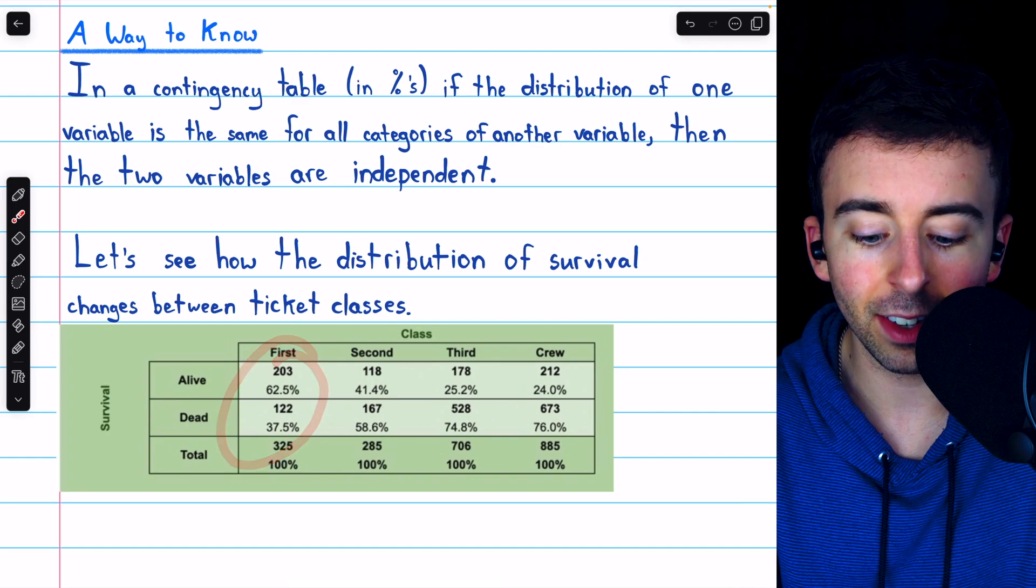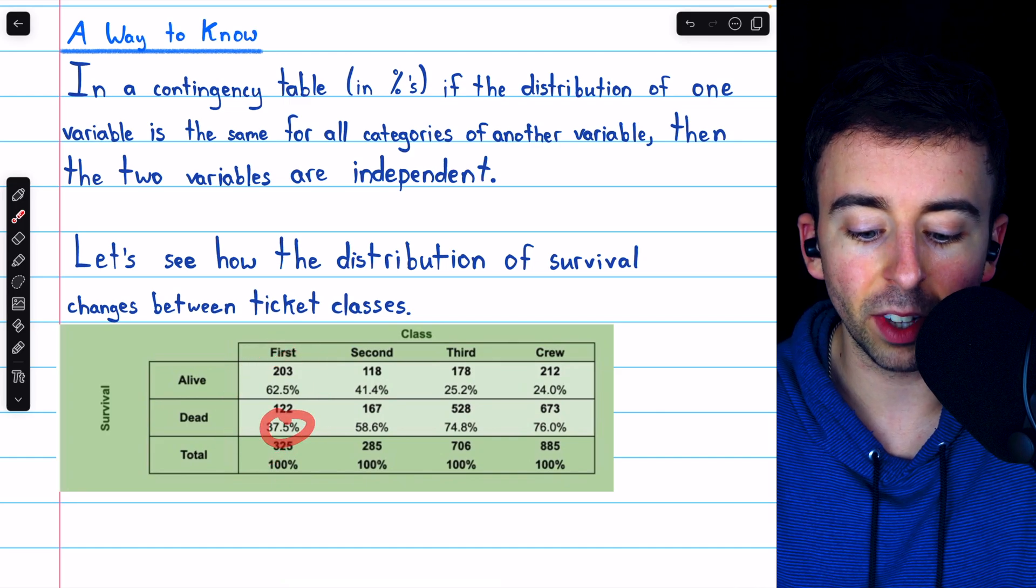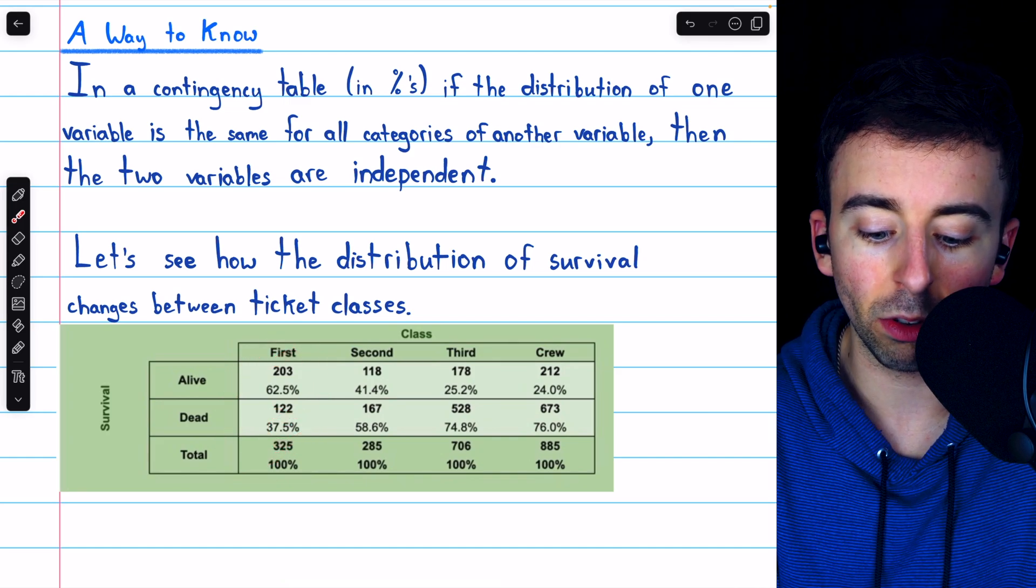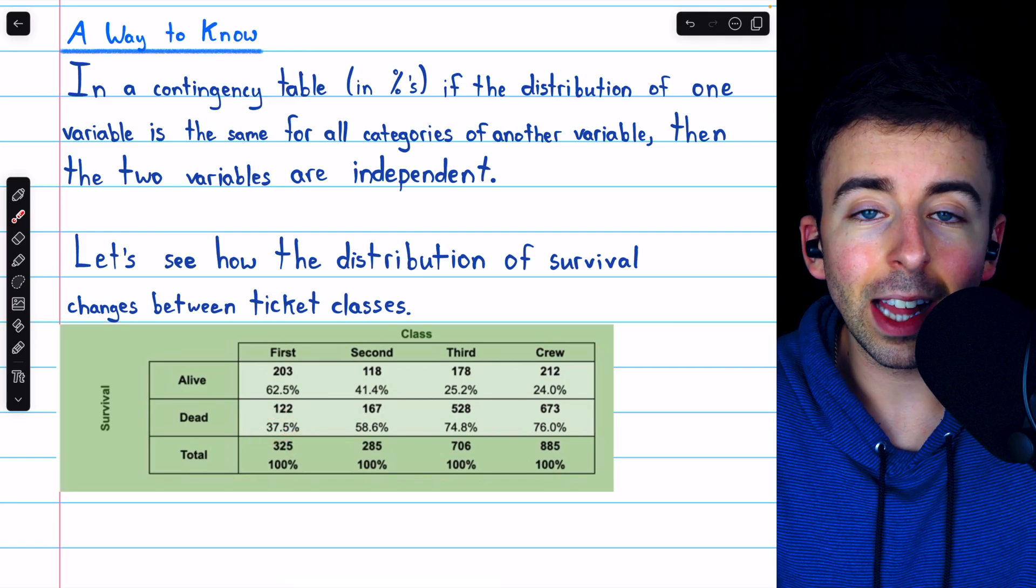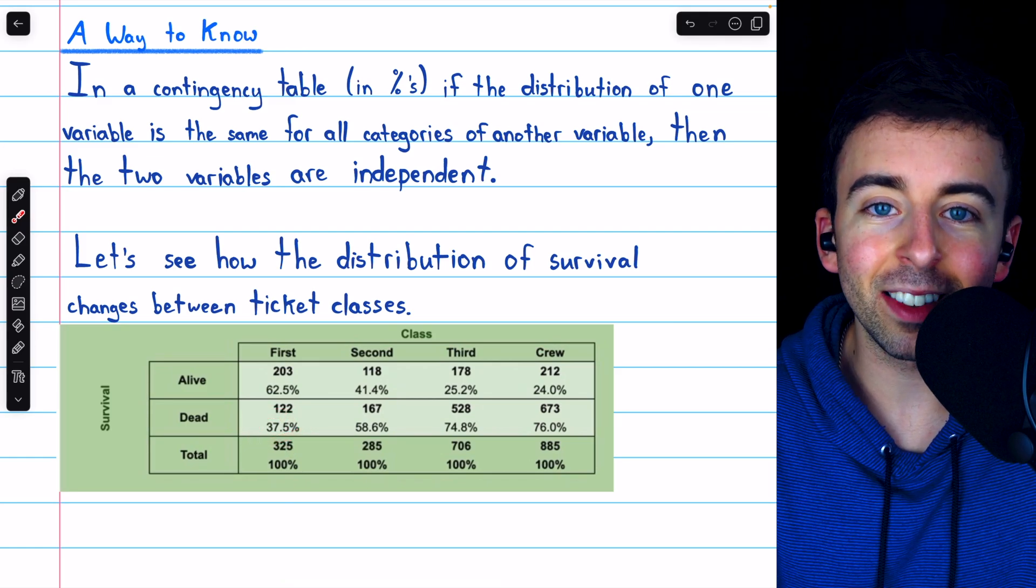Contingent on the fact you're in the first class, there was a 37.5% chance you died. We use 325 as the total for that number. So that's a lot of clarifying commentary. Now let's ask, are the variables associated?